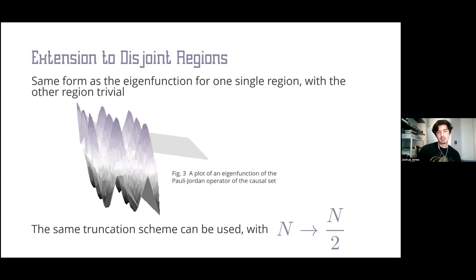With a little thought, we can use the same truncation scheme as before, except with a slight modification of n to n over 2. This is only in the identical region case. We can treat differently sized regions in much the same way, except this time we look at which region the eigenfunction has support over and truncate according to the number of elements within that small disjoint region.